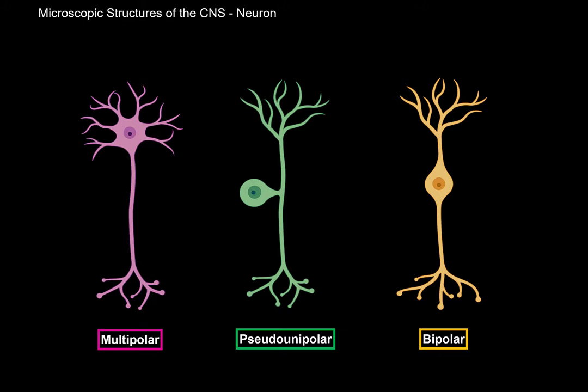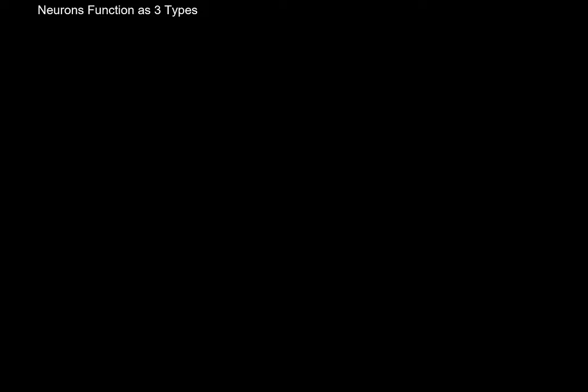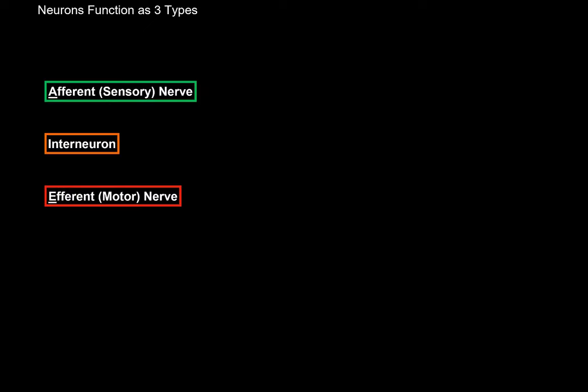So nerve cells differ in structure depending on where you find them. But neurons also differ in function. There are three general functions a neuron can have. A nerve can either be afferent, or sensory nerve. It can be an interneuron. Or it can be an efferent, or motor nerve.